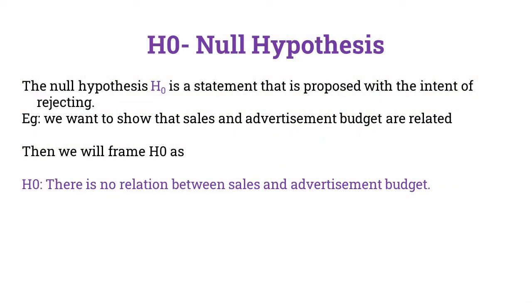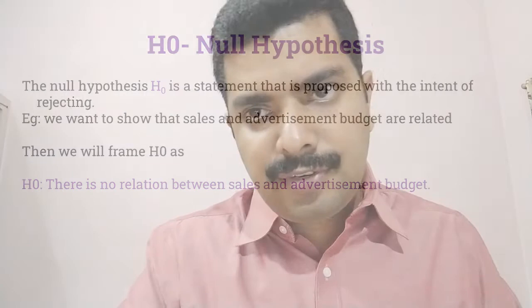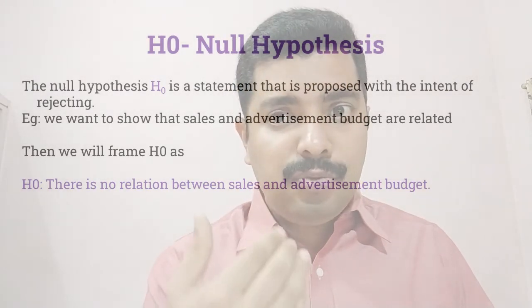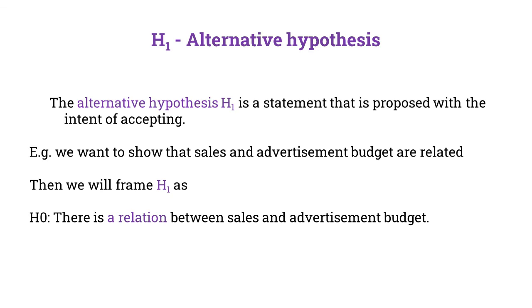The null hypothesis is a statement proposed with the intent of rejecting it. Here is another example: we want to show that sales and advertisement budget are related. If the advertisement budget is high and you make a very good advertisement, then obviously your sales go high. The null hypothesis can be framed as: there is no relationship between sales and advertisement budget. The alternate hypothesis would be: there is a relationship between sales and advertisement budget — it is a statement proposed with the intent of accepting.